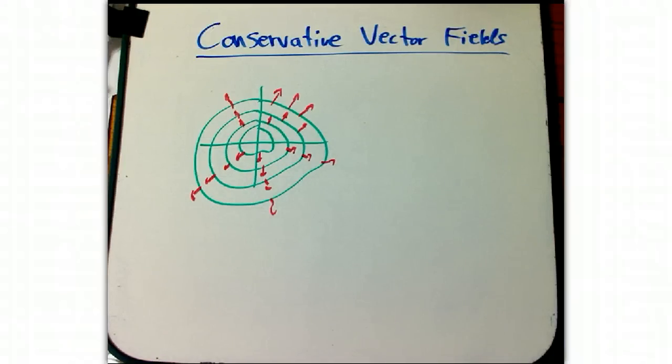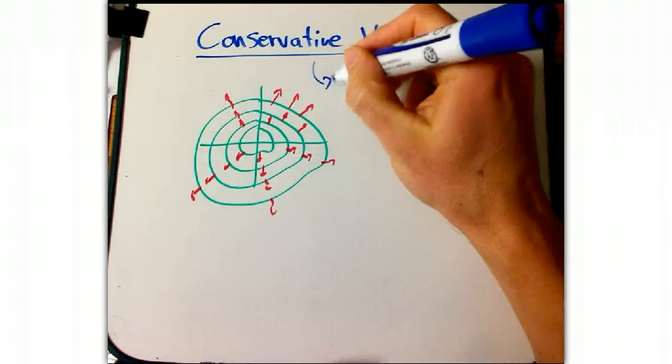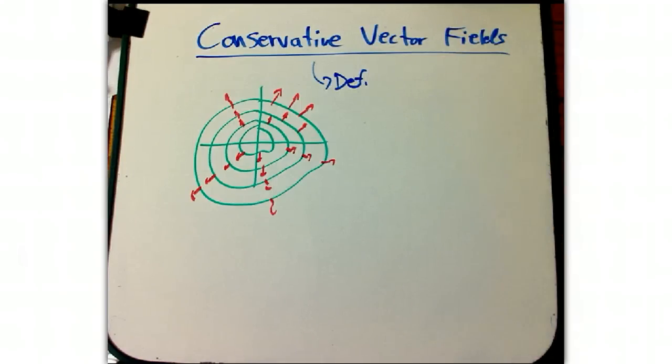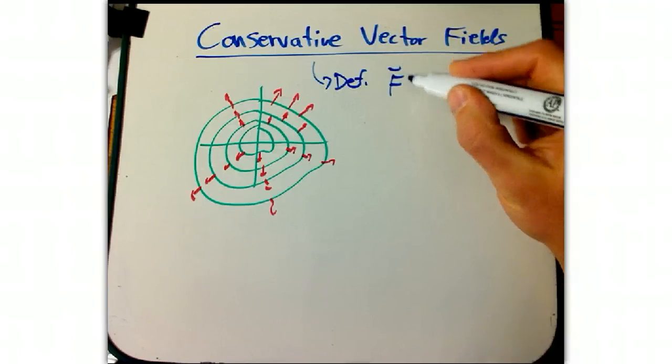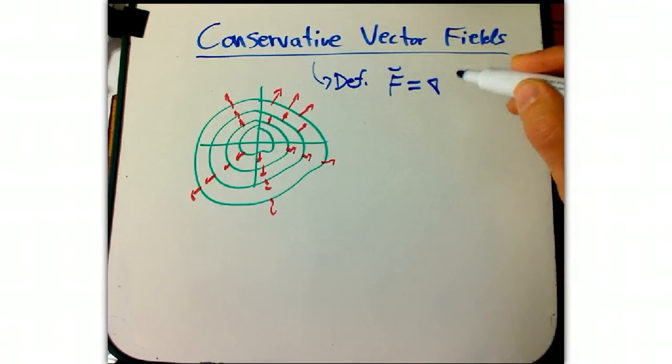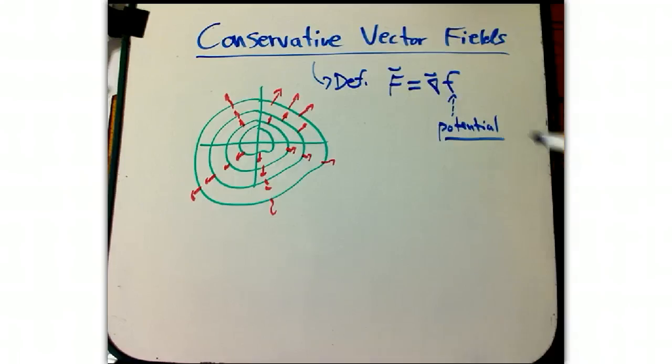I want to talk about conservative vector fields. By definition, or one definition, the definition we use in the book, is that a vector field F is conservative if it is the gradient of some function. The terminology conservative and the fact that this is a potential function both come from physics. We'll talk about the connection in some other video, but here we're going to keep it mostly mathematical.